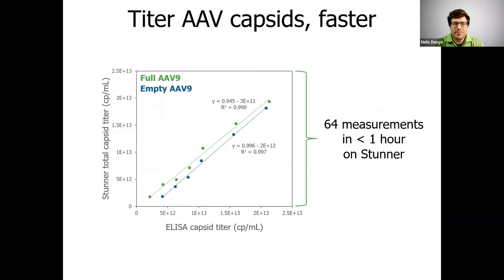For getting capsid titer versus ELISA, Stunner is way faster and requires a lot less lab work in general. Here we took full or empty AAV9s, ran a dilution series, and ran them both on ELISA and on Stunner, looking at the total capsid titer. The results have slopes close to one and R-squared values above 0.99. But most importantly, it would have taken hours to get this ELISA data, while Stunner did it in less than an hour with no sample prep at all.